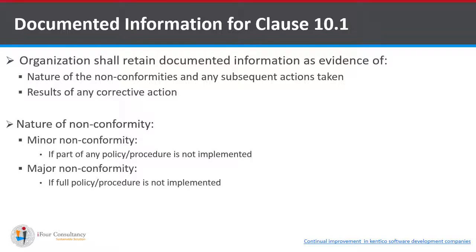What is the nature of non-conformity? There are two types: minor and major. A minor non-conformity is when part of a policy or procedure is not implemented. A major non-conformity is when the full policy or procedure is not implemented at all. According to the nature of the non-conformity, corrective actions are implemented.